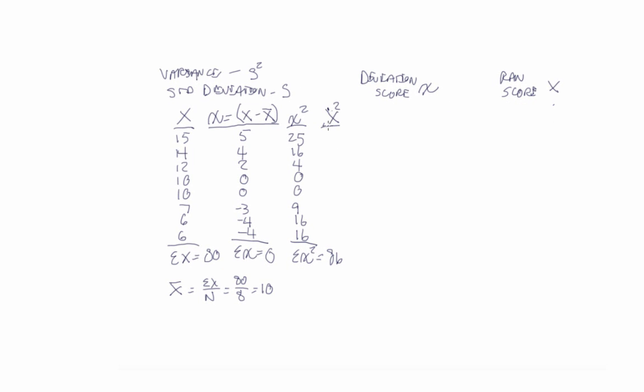So we're going to take each of our raw scores and square them. So 15 squares to 225, 14 squares to 196, 144, 100, 149, 36, and 36. The sum of our raw scores squared is equal to 886.